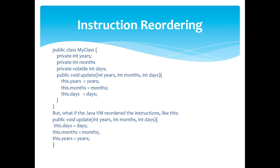But what if JVM re-ordered the instructions like this. This time it happens before the new values have been written to months and years. The new values are thus not properly made visible to other threads.